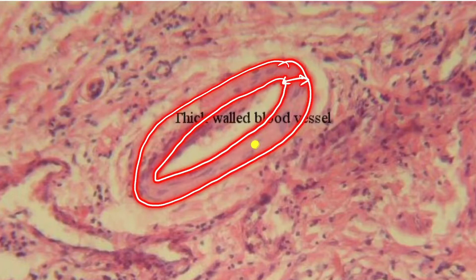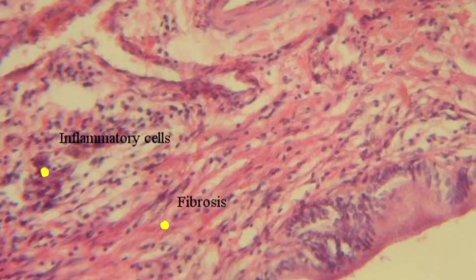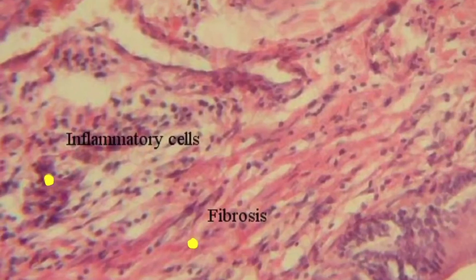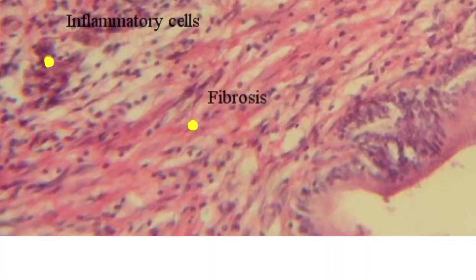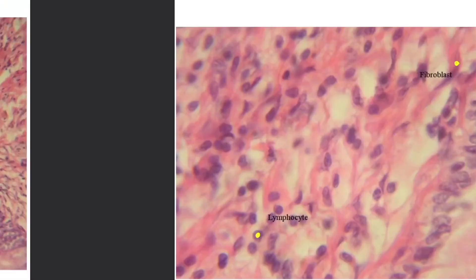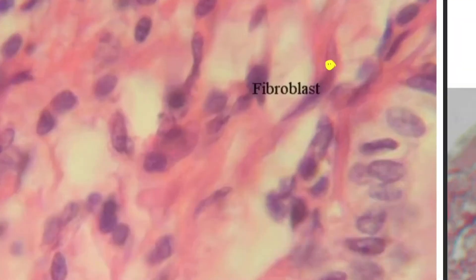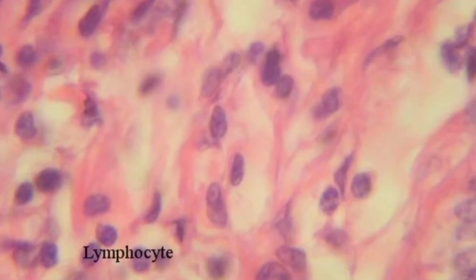The thickness of the wall is increased. Here also you can see the inflammatory cells and the deposition of fibrin, which causes fibrosis. In the next picture we will see the presence of fibroblasts, which are inflammatory cells.